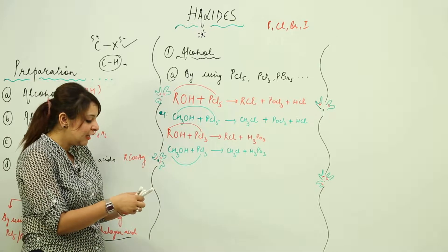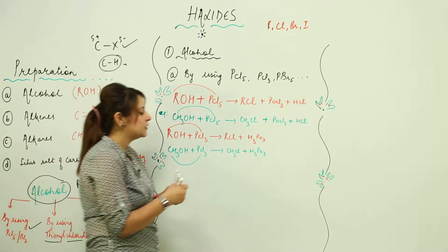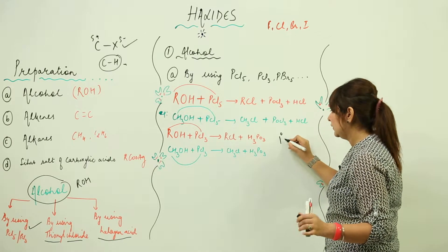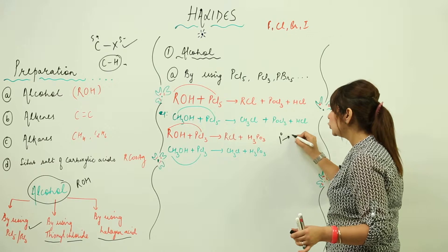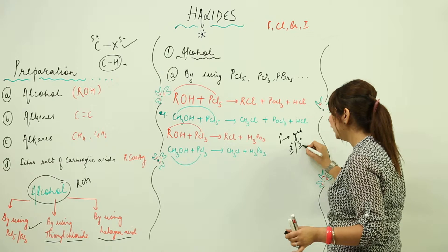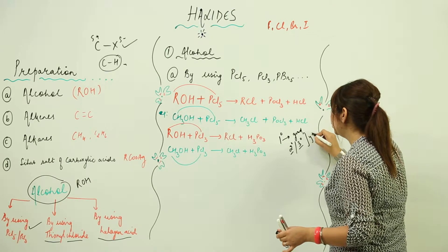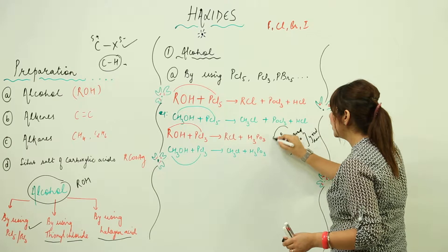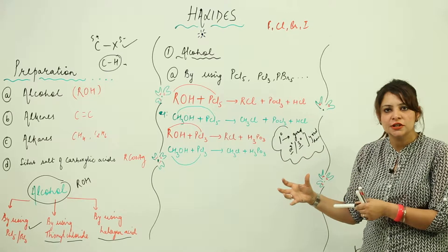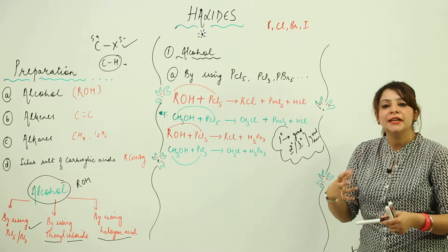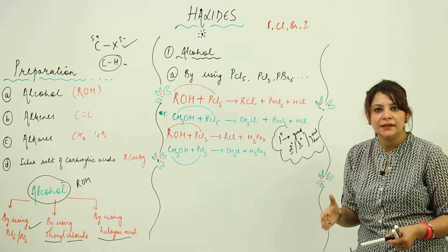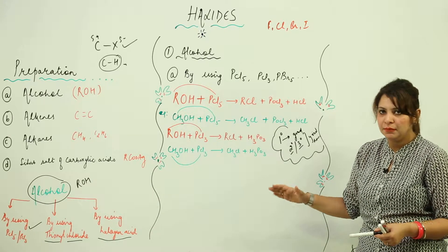There is a limitation to the phosphorous halide method: for primary alkyl halides the yield is good, but for secondary and tertiary alkyl halides the yield is low. Therefore, this method is generally used for preparing primary alkyl halides only.